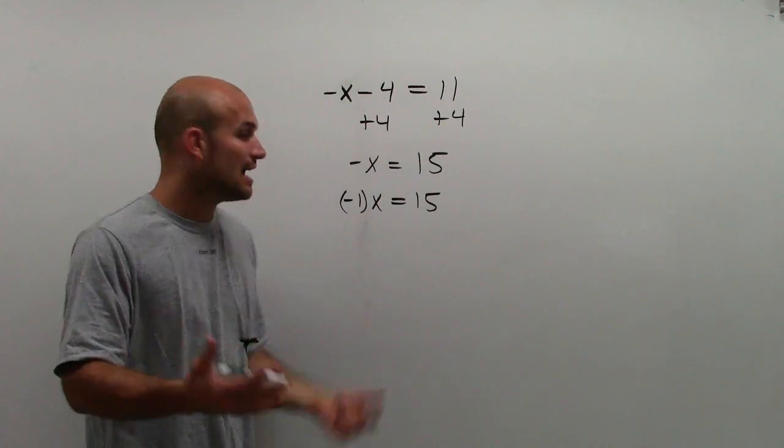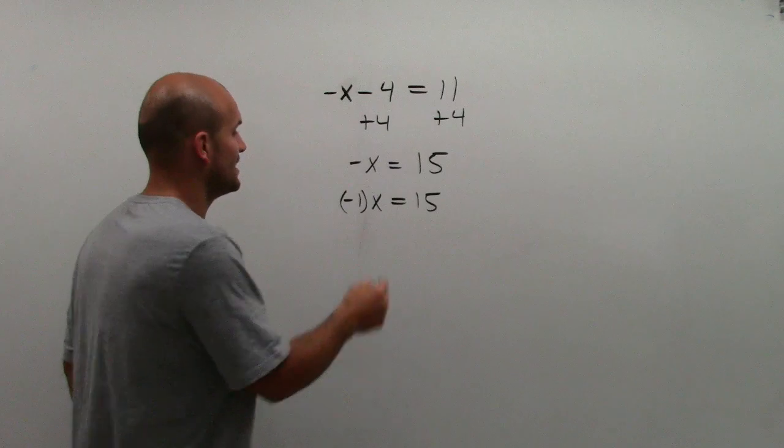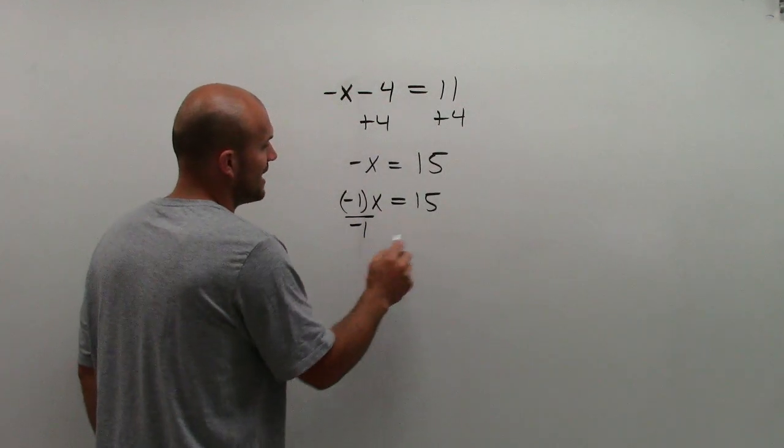So negative x is the same thing as saying negative 1 times x. So in reality, I'm actually multiplying by a negative 1. So to undo multiplying by a negative 1, I need to divide by a negative 1.